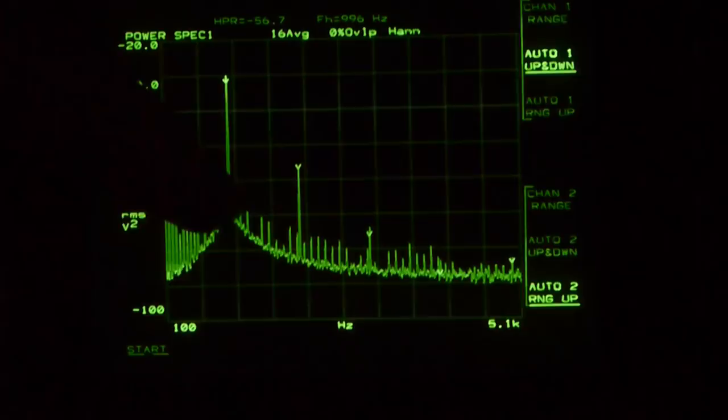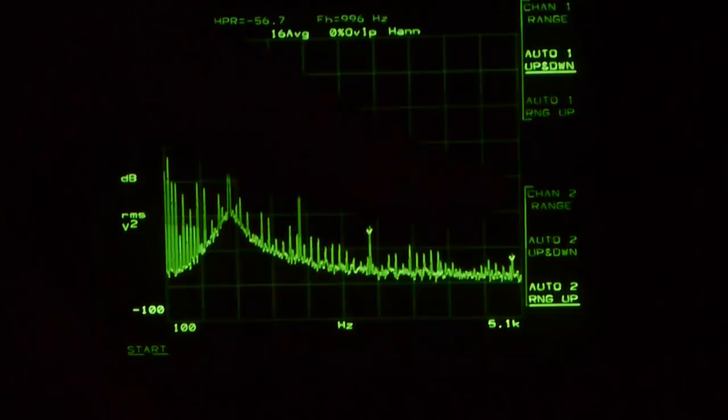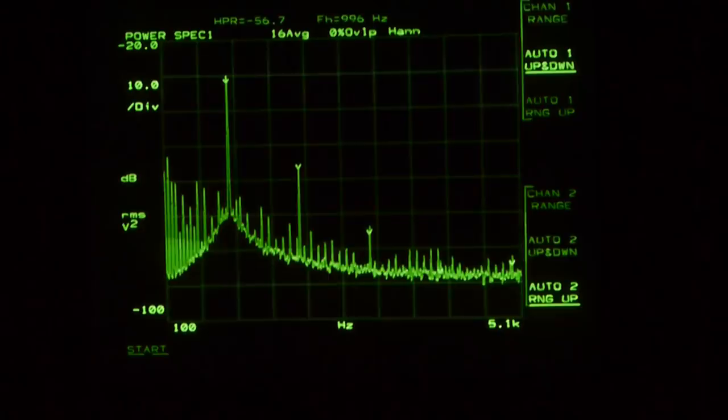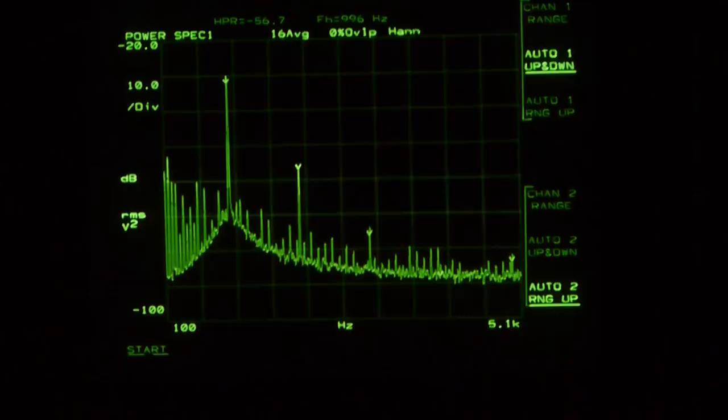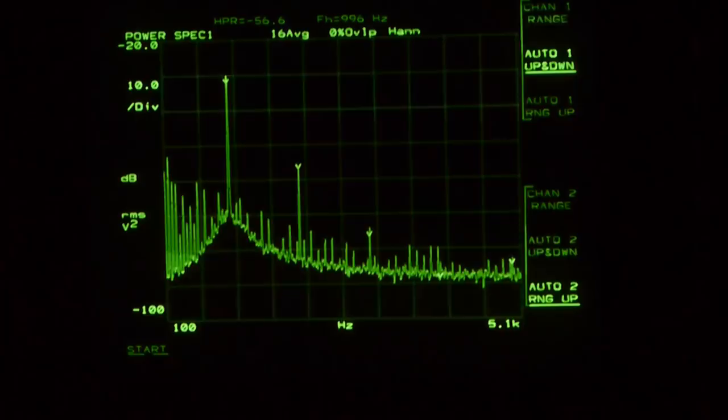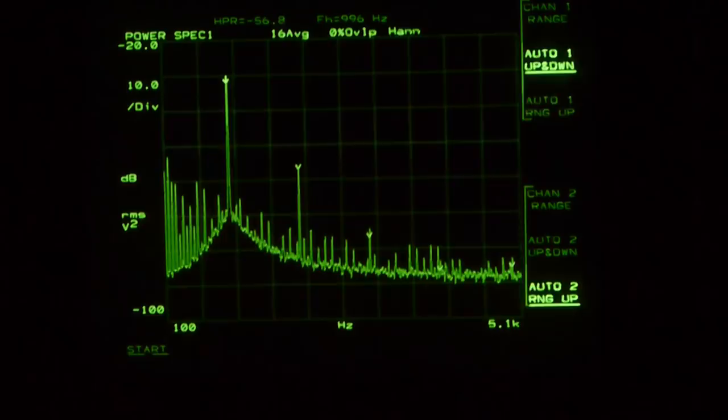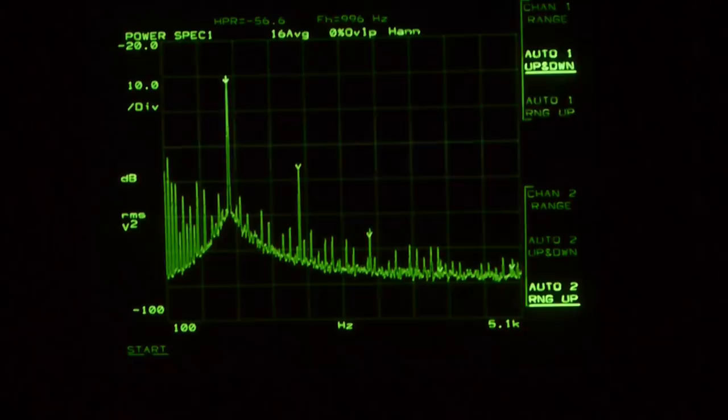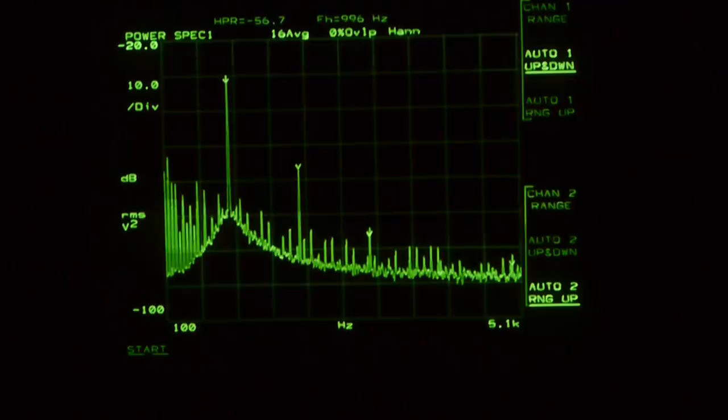You might think with a device that can measure down to minus 80 dB, notch filtering into a device that can also measure down minus 80 dB, that you'd get some whiz-bang minus 160 dB of dynamic range, but it doesn't work that way. The noise floor and probably the residual distortion of the analog distortion meter start to rear their ugly head. Nevertheless, we're looking much more deeply into the distortion spectrum of our source, and that's looking quite promising. So I think that illustrates how we could perform the same thing on our device under test.